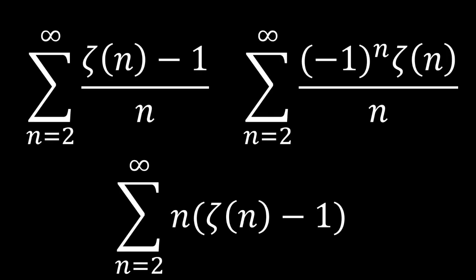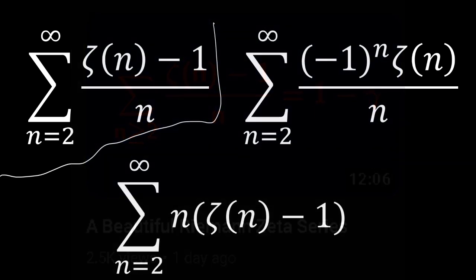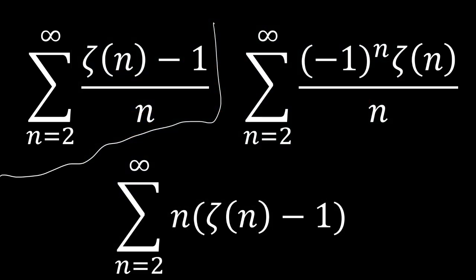Hello guys and welcome to another calculus video. Today we're going to be checking out all three of these epic zeta infinite sums. The Riemann zeta function is really interesting because it's defined by an infinite sum, and the function inside that infinite sum is actually very simple and easy to work with, which makes it very easy to manipulate and fit into problems in many different ways. This first problem is inspired by Maths505's recent video — definitely go check that out. We're going to use a different method to evaluate it, and then use that method to solve the other two sums. So without further ado, let's jump right into the video.